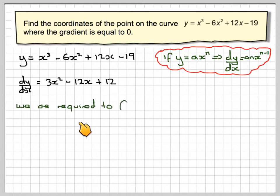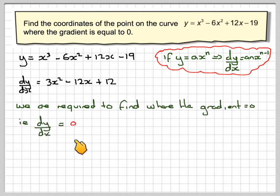We are required to find where the gradient is equal to 0. That means dy by dx will be equal to 0. So we're going to take this, 3x squared minus 12x plus 12, and put it equal to 0.